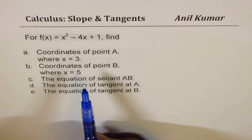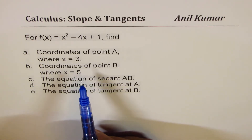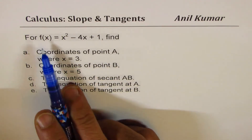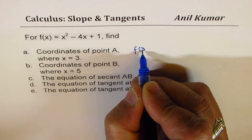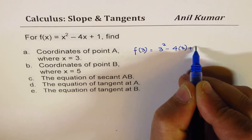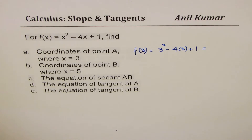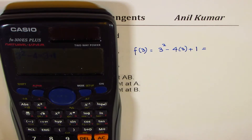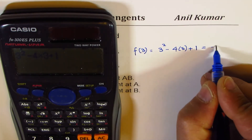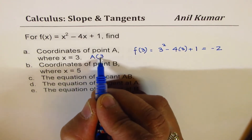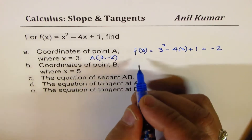Let's begin by finding the coordinates of point A. We are given x = 3 at A, so we find f(3) = 3² - 4(3) + 1, which gives us -2. So the coordinates of point A are (3, -2).